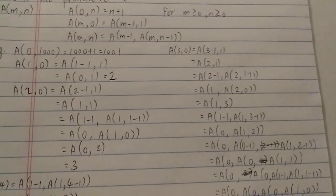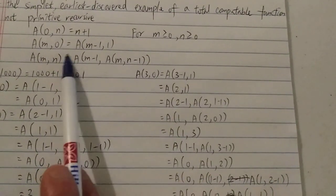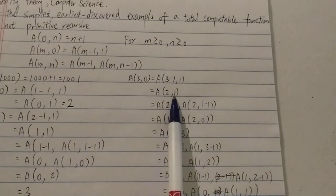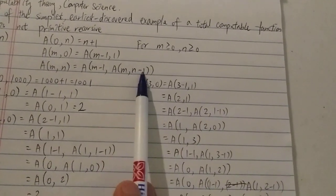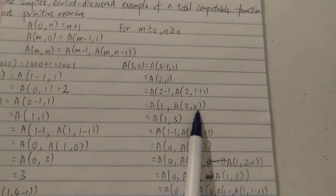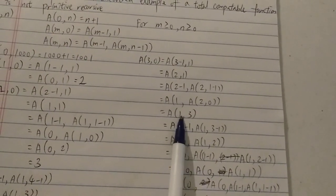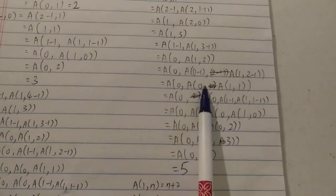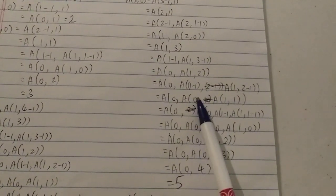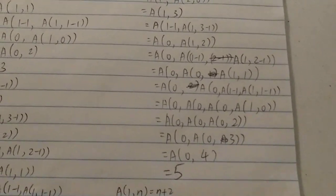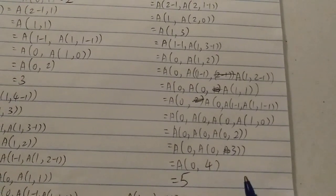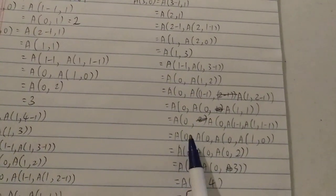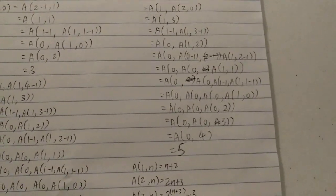What about A(3, 0)? Using the second case it becomes A(2, 1). Since both M and N are non-zero you have to use the third case repeatedly — blah blah blah — and every time you get another non-zero M and N, you have to invoke the third case again. The calculation is more than ten steps. You can pause the video and work it out yourself, but at the end you get the answer five. Relatively small answer, but writing it all out involves a lot of steps.